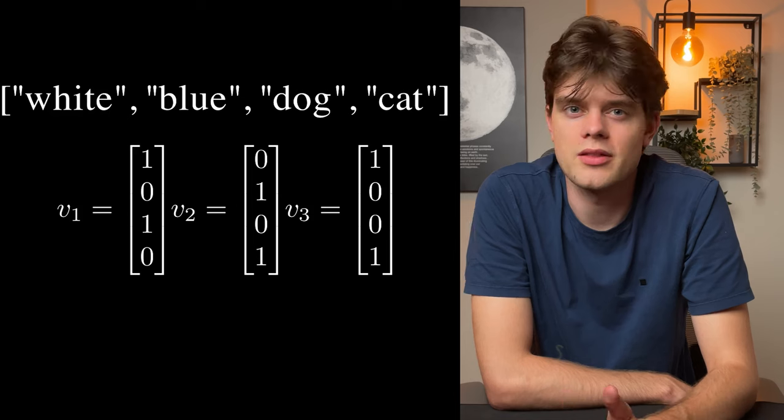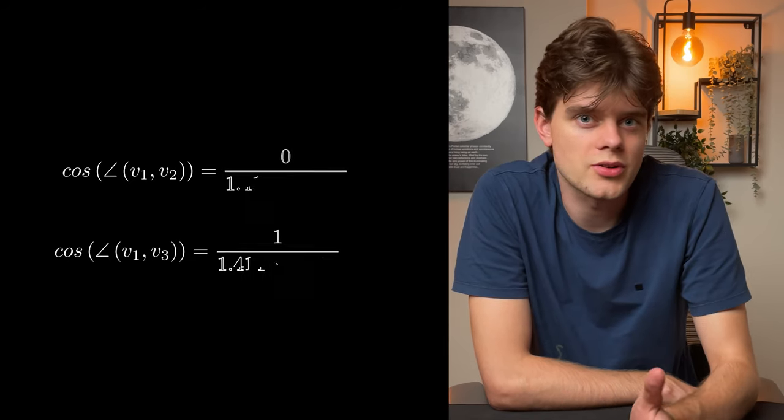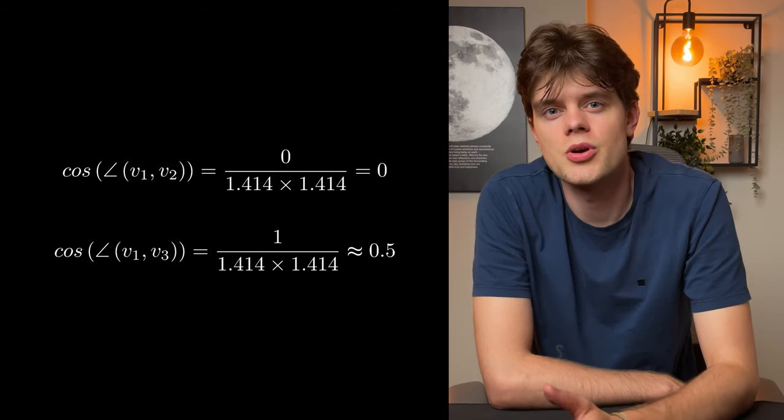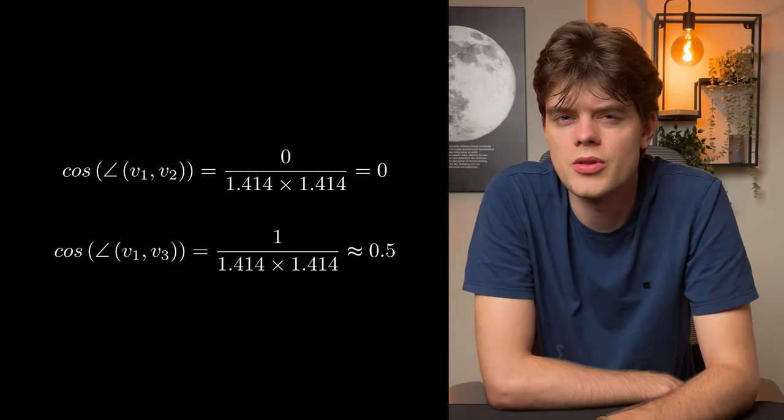Now it's time to calculate the cosine similarity, so we simply plug these vectors into the formula. Our similarity scores show that the third text string is the most similar to the first one. Of course this is a very primitive example and there are many ways to vectorize text or images. One way would be to use a neural network, but this is a topic for next time.